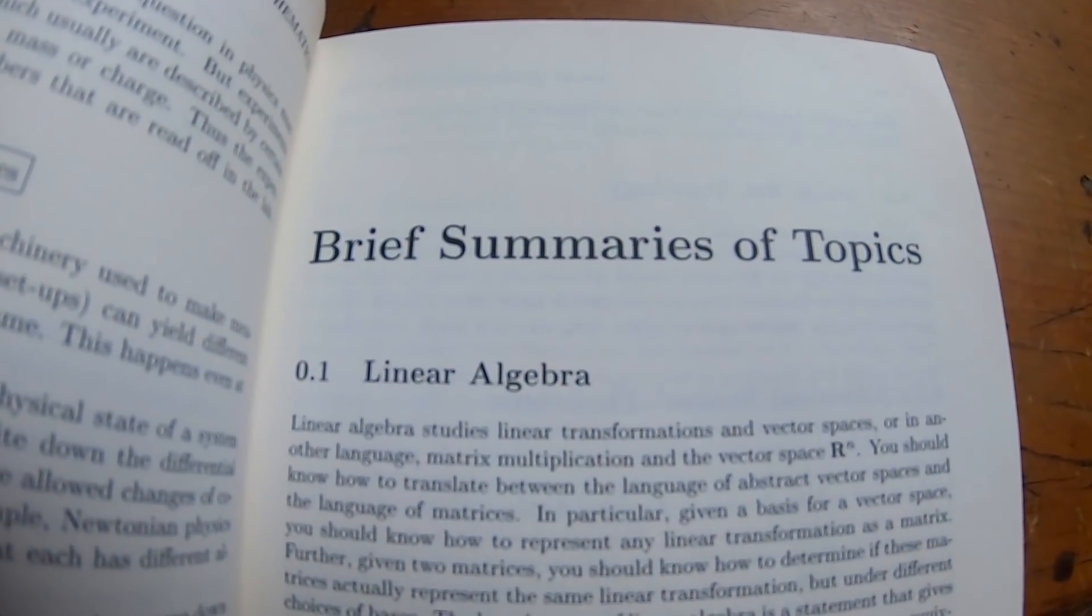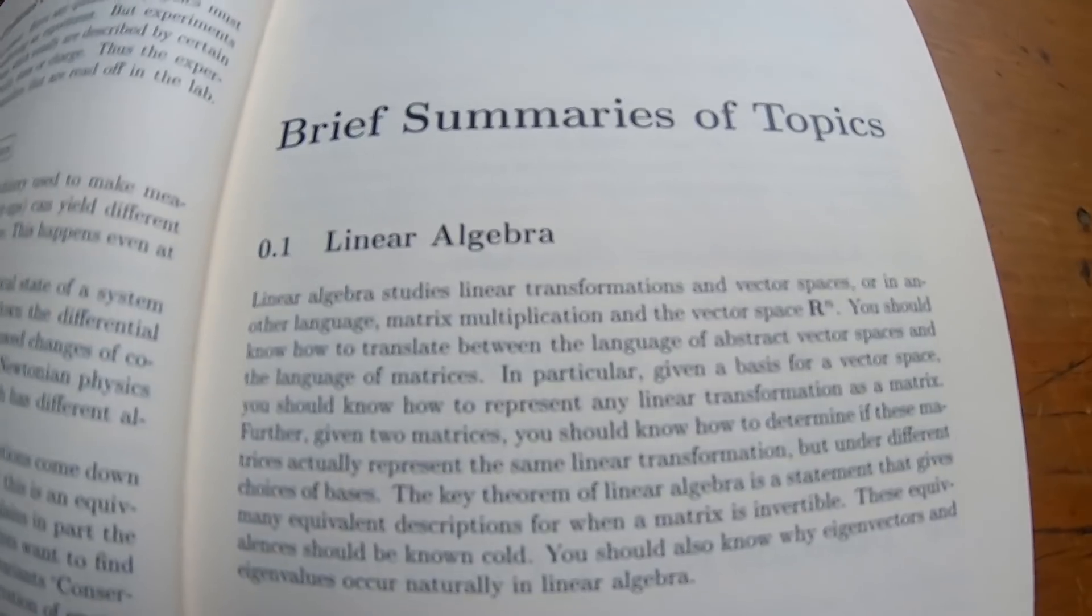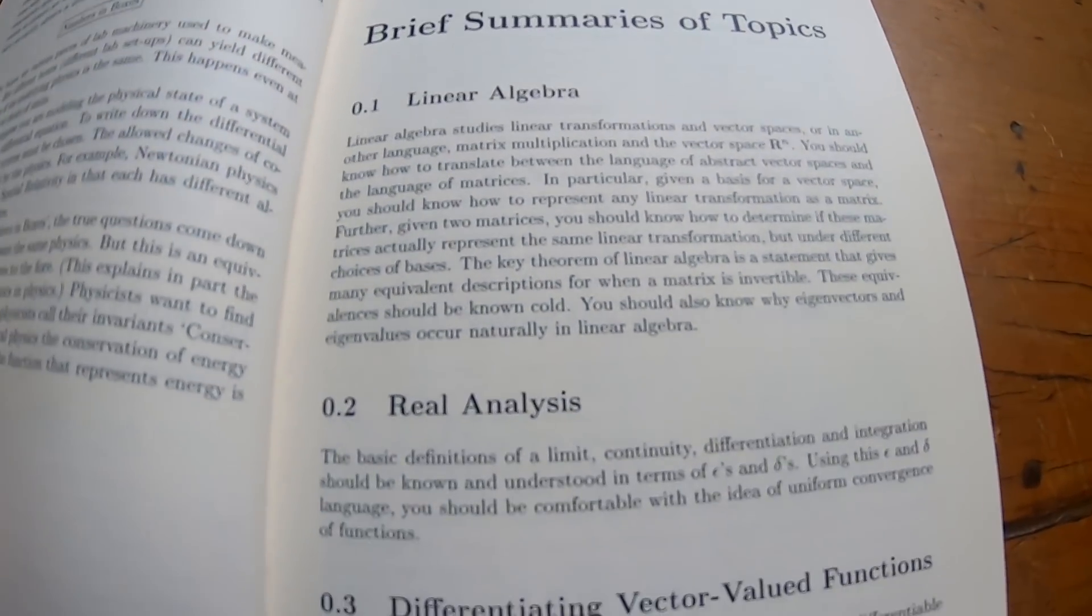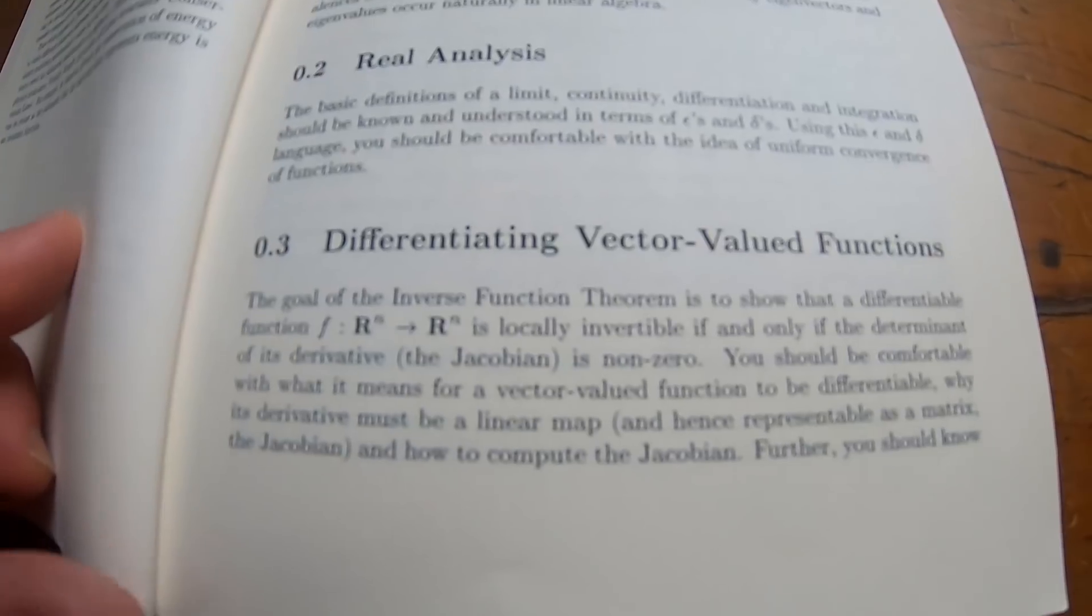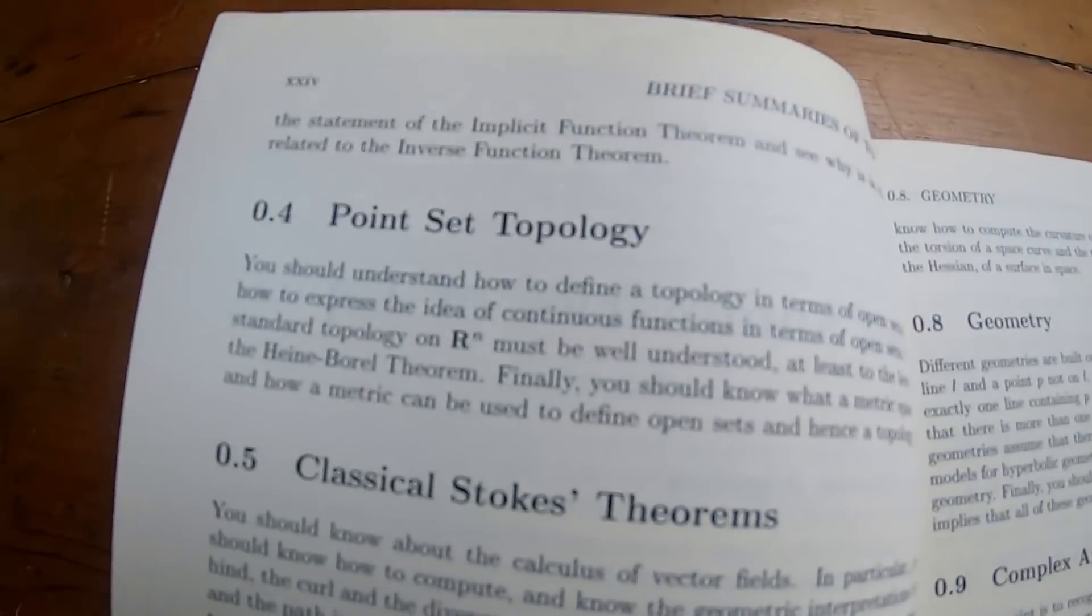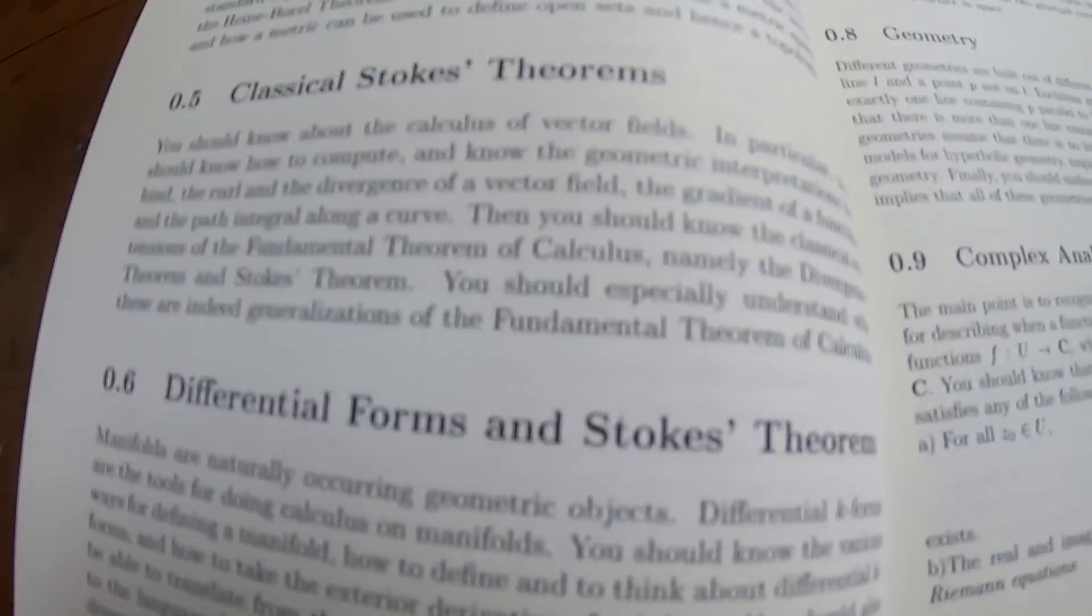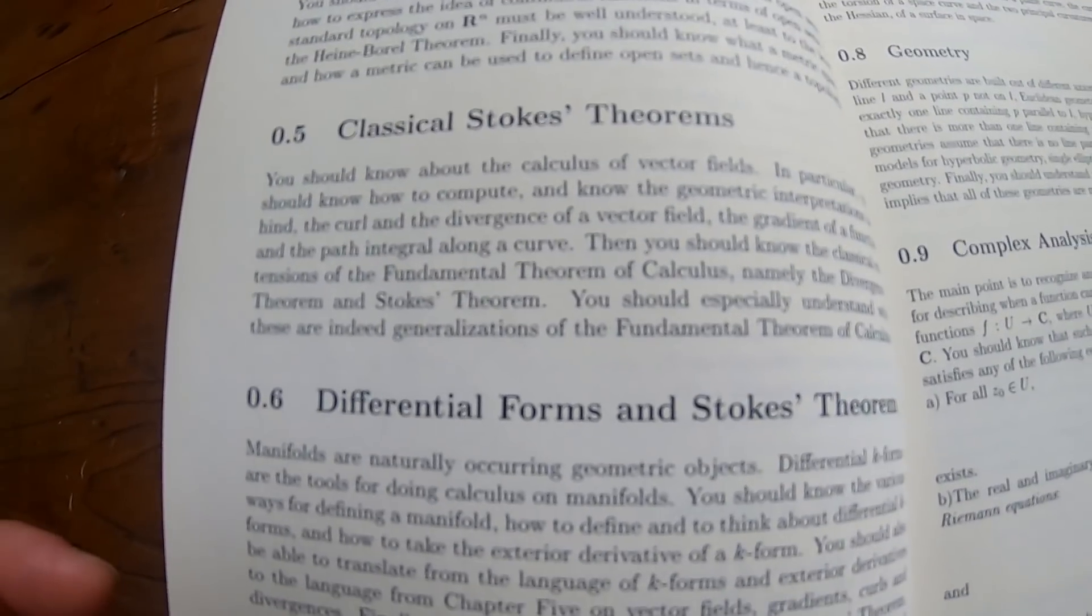Here he gives a brief summary of topics, and this is really well written. So he just goes through each one, really, really short. See, linear algebra, real analysis, differentiating vector-valued functions. Well, he has a whole little section on that. And then points at topology, Stokes theorem, differential forms, and Stokes theorem. He explains this quite well, by the way. He does a pretty good job.